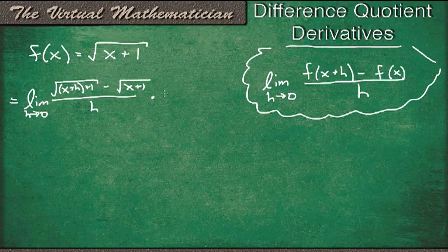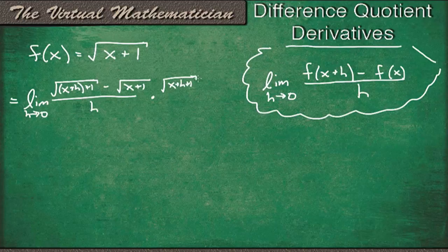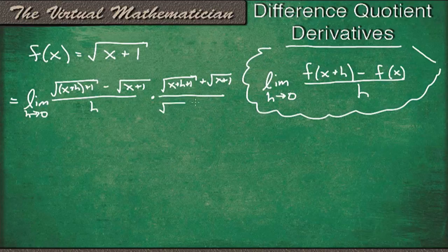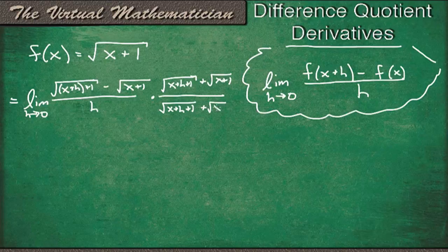So let's multiply by square root of x plus h plus 1 plus square root of x plus 1, because that's the conjugate, just changing the sign there, over the same thing. Square root of x plus h plus 1 plus square root of x plus 1, so we're just multiplying by 1, therefore not changing the value of this limit.